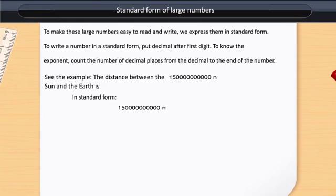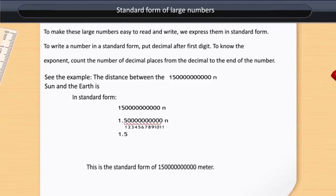we now put the decimal after 1 and then count the digits: 1, 2, 3, 4, 5, 6, 7, 8, 9, 10, 11. There are 11 digits. Therefore, it becomes 1.5 × 10^11.